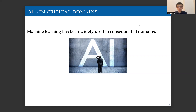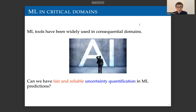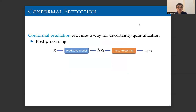Recently, people are not only interested in those prediction values, but they are also interested in uncertainty quantification. So in this talk, we are going to introduce a general framework that can give us a fair and reliable uncertainty quantification in machine learning predictions. A state-of-the-art method for uncertainty quantification is called conformal prediction, which I'm going to introduce below.